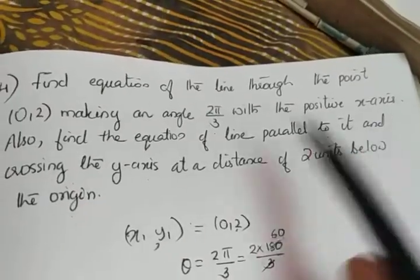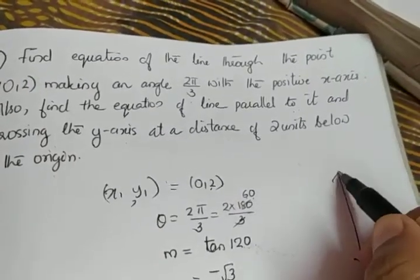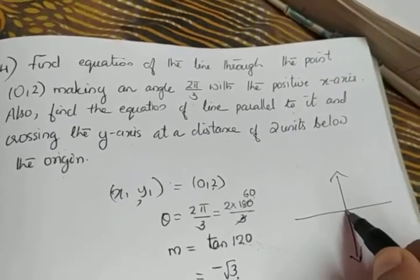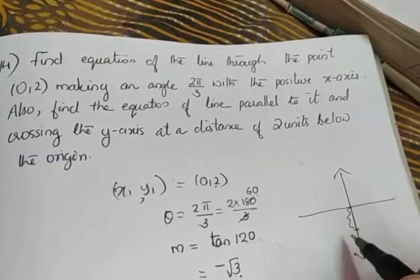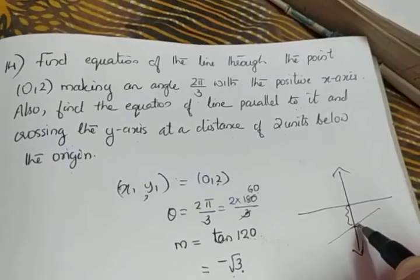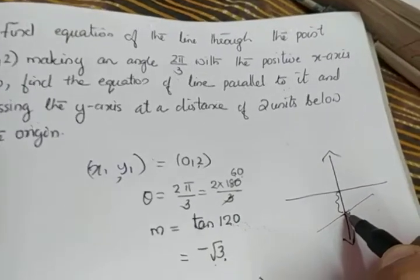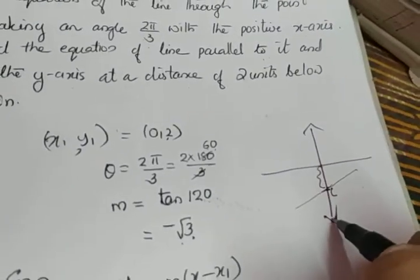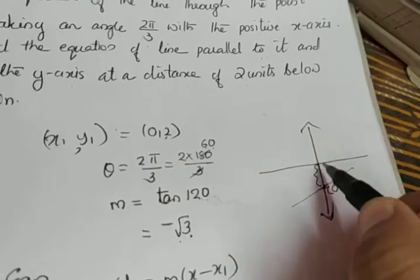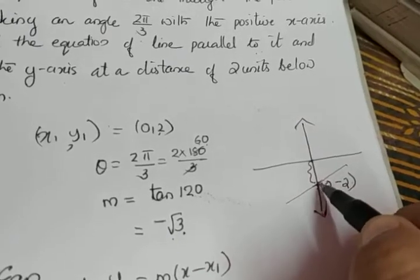The second clue is that the line crosses the y-axis at a distance of 2 units below the origin. The y-axis is this one, and 2 units below the origin means the crossing point is marked as −2 on the y-axis. Since it is on the y-axis, the x-coordinate is 0, and since it is 2 units below the origin, the y-coordinate is −2. So the point on the line is (0, −2).